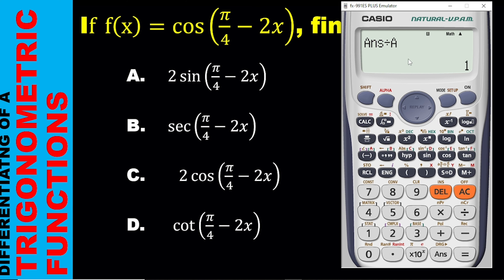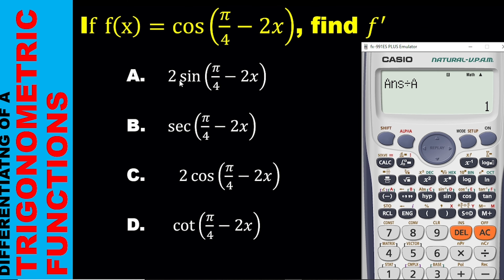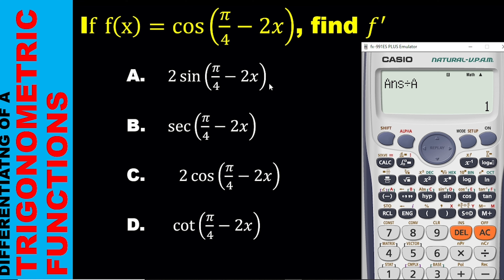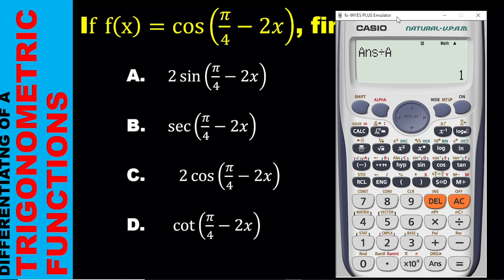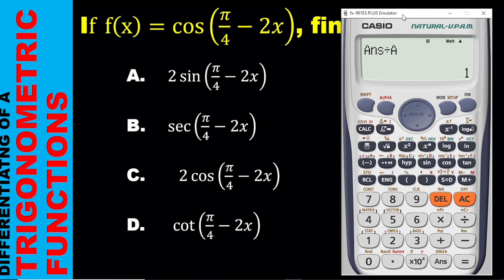How do we know that this answer is correct? We are going to divide this answer by the one we saved in A. When we divide and we get 1, that means this is the correct answer. You click divide, then alpha A, then press equal. We get 1! So the correct answer for this question is 2 sine bracket pi over 4 minus 2X close bracket. When we differentiate this using the calculator, this is what we get. It is very simple — all you need to do is to practice.